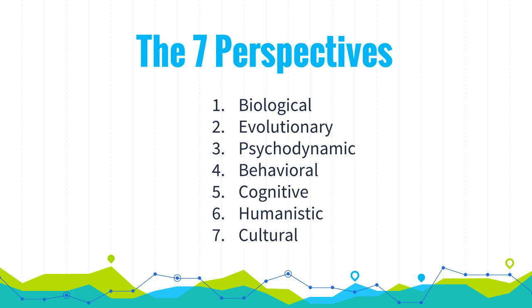A quick note on behaviorists: they believe psychology should be an objective science and should study behavior without reference to mental processes. Most psychologists today support that first tenet — that psychology should be objective — but reject the second, accepting that mental processes are a valid area of study.